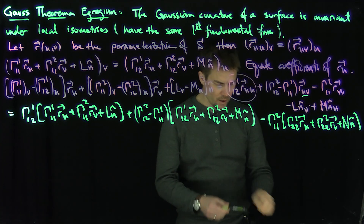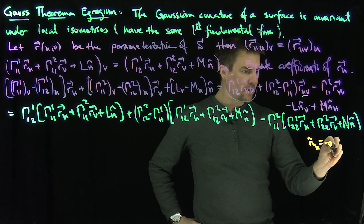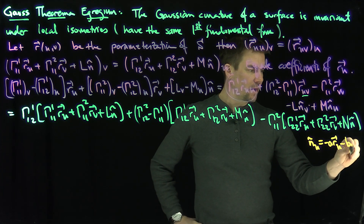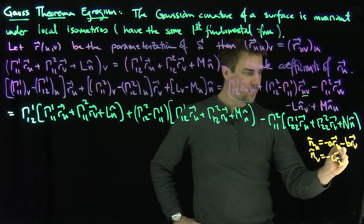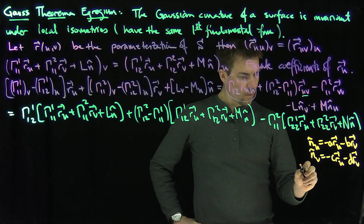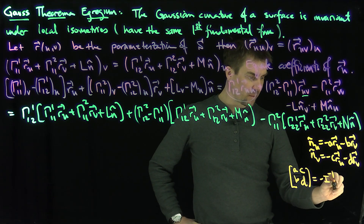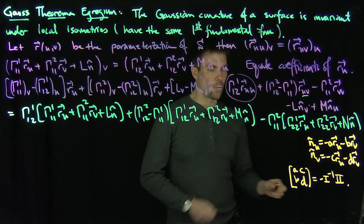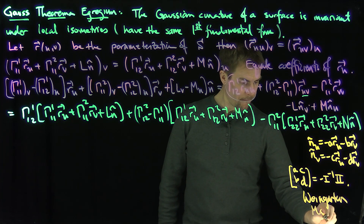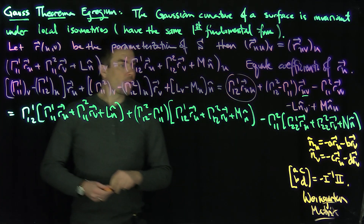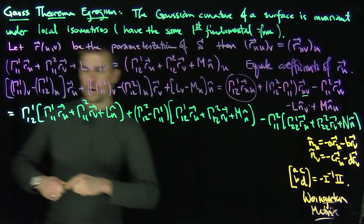We recall that N_U = −A R_U − B R_V, and N̂_V = −C R_U − D R_V, where the matrix [[A, C], [B, D]] equals negative the inverse of the first fundamental form times the second fundamental form. That is the Weingarten map inverse matrix.